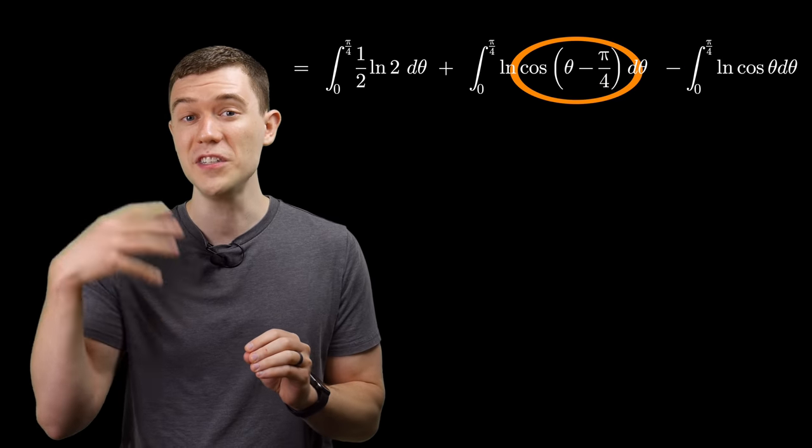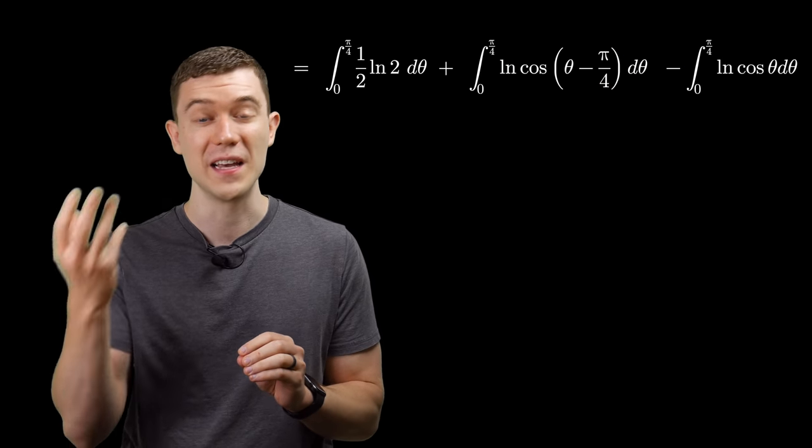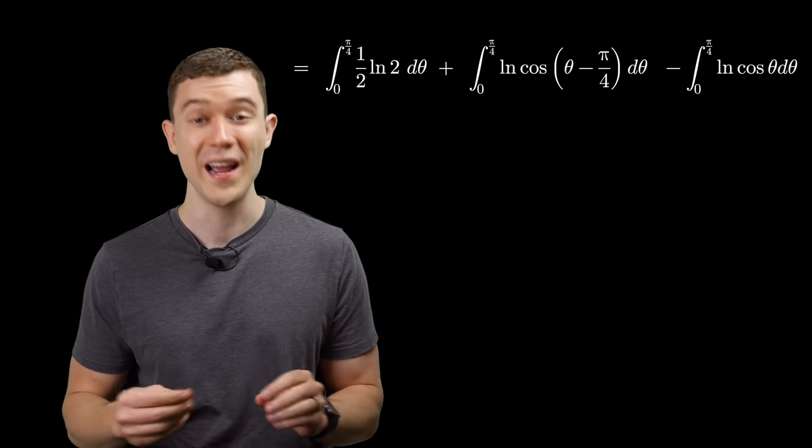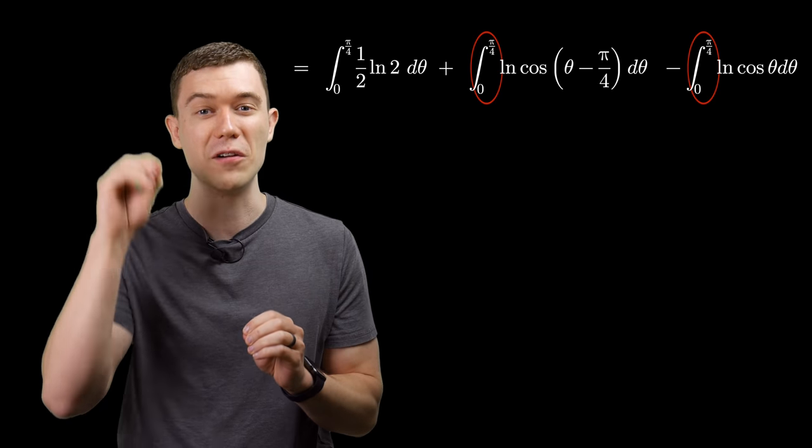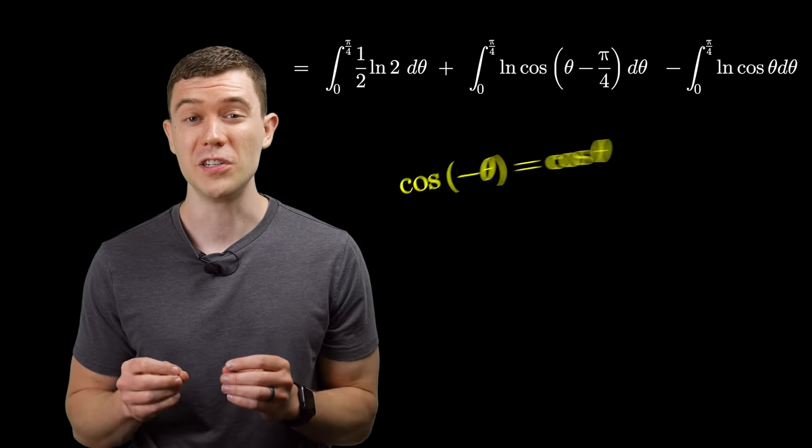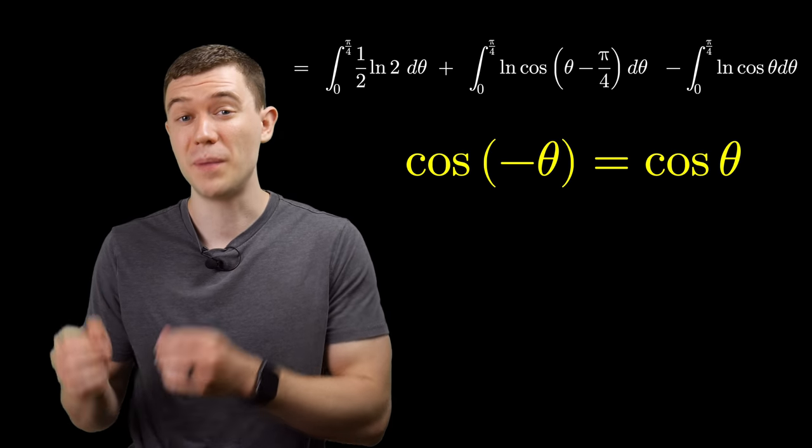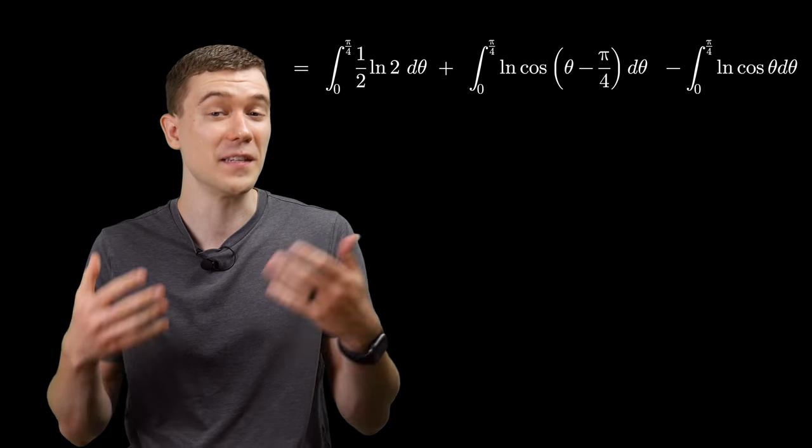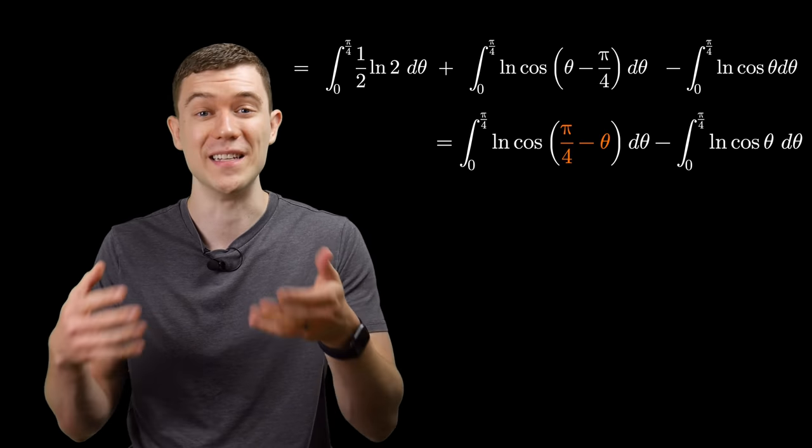They're pretty similar. One's just theta, the other is theta minus pi over 4. And we're integrating from 0 to pi over 4. Cosine is an even function, so theta minus pi over 4 is the same as pi over 4 minus theta when it's inside cosine.